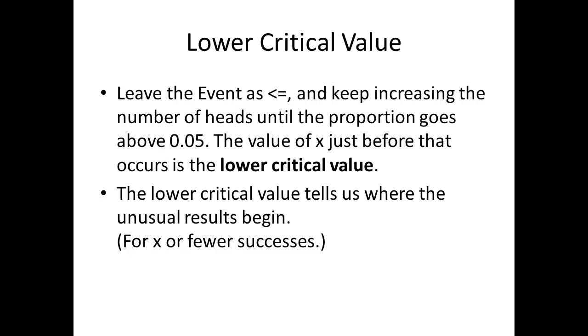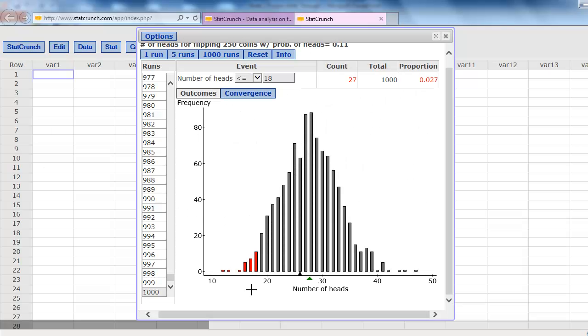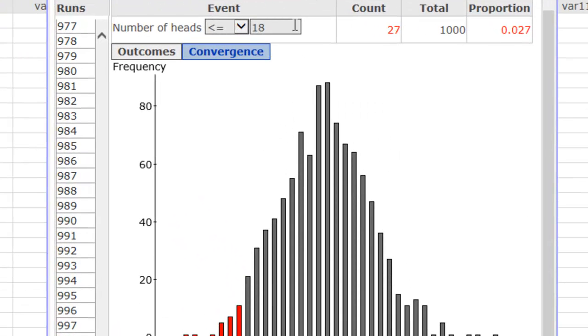Now for the upper critical value, let's talk about how to find the lower critical value. What I want to do here is find the biggest value for the number of heads or X that I can find that comes the closest to 5%, .05, without going over. So I'm going to start increasing the number of heads. I'll try 19 and push enter. .048, that's pretty close to 5%. I'll go one more. I'll change 19 to 20. Now I'm way over.